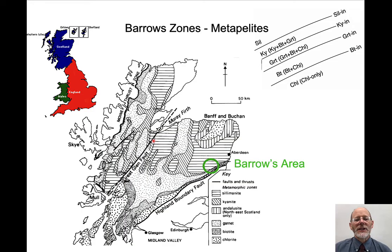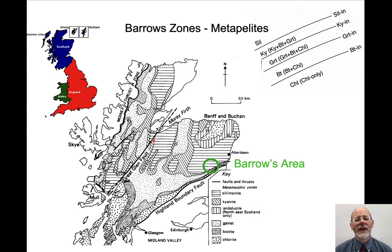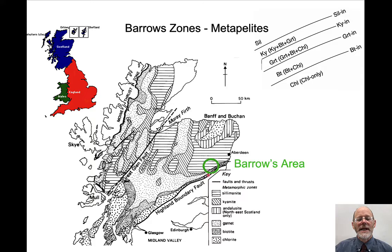Let's switch now and talk about Barrow's zones. Barrow's zones refer to the characteristic minerals that we observe in metamorphosed mudstones. Barrow first mapped this area in Scotland. What he found is that there are distinct zones: a chlorite zone, biotite zone, garnet zone, and so on, expressed in a gradient across this area.